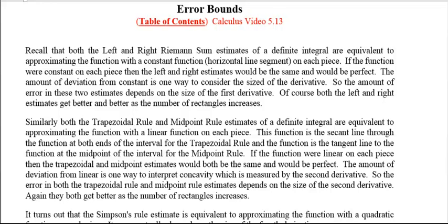Similarly, both the trapezoidal rule and midpoint rule estimates are equivalent to approximating a function with a linear function on each piece. The function is a secant line through the function at both ends of the interval for the trapezoidal rule, and it's the tangent line function at the midpoint of the interval for the midpoint rule. If the function were linear on each piece, then both of these would be the same. Both trapezoidal and midpoint rules would be the same, and they would both be perfectly the same as the actual integral. So the amount of deviation from the line, which is concavity,